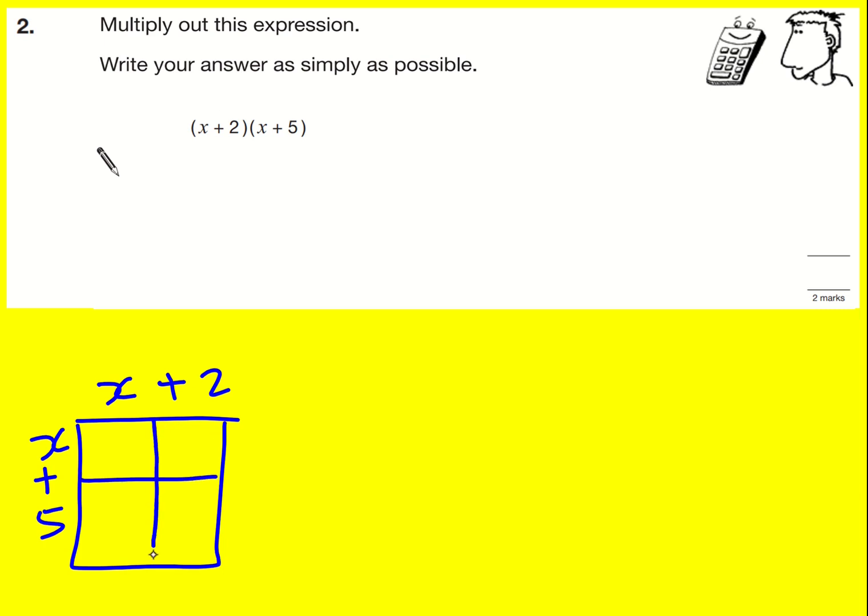What I can do is split it into these little four sections and I can basically find each one in turn. So this is going to be x times x which is x squared, and it's going to be x times 2. You can imagine these as lengths now, so this is going to be 2x, this is going to be 5x, and this is going to be 10.